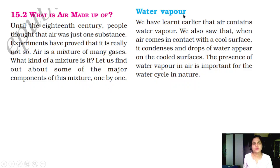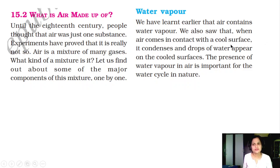The first component is water vapor. We have learnt earlier that air contains water vapor. In the water cycle, we learnt that water vaporizes from the sea and floats in the air in the form of clouds. We also saw that when air comes in contact with a cool surface, it condenses and drops of water appear on the cool surfaces. The presence of water vapor in the air is important for the water cycle in nature.